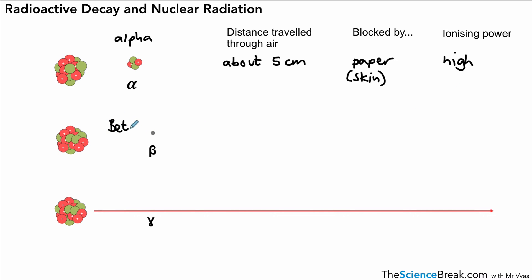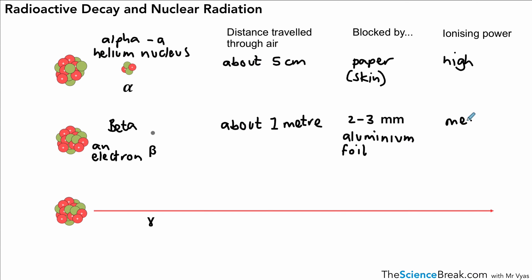In terms of our beta particles, there's our beta particle. In fact, we can label that to show that it's an electron, and our alpha particle, we should perhaps label that: it's two protons and two neutrons, an alpha particle, the same as a helium nucleus. Let's get back to our beta particle. It can travel about one meter in air, and it's blocked by two to three millimeters of aluminum foil. The ionizing power for beta particles is medium.